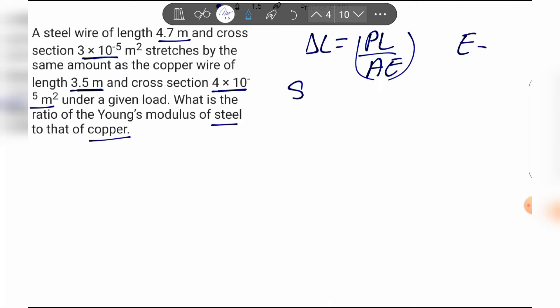So Es by Ec, we need to find out this ratio. Steel properties: length of steel Ls equals 4.7 meters, and cross sectional area As equals 3×10^-5 m².